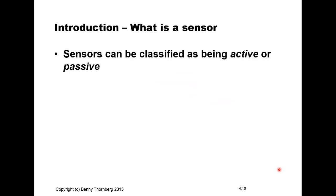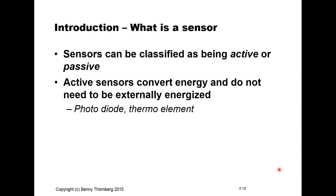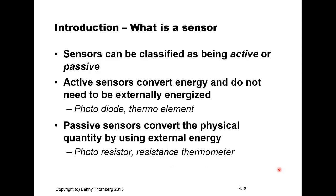We can further classify sensors into being either active or passive. An active sensor can convert the energy of the input and does not need any external energy to work. Examples of such are photodiodes for measuring light intensity or a thermal element for measuring temperature difference. A passive sensor, on the other hand, converts a physical quantity by using external energy, so we need an external power supply to make it work. Examples of such are photoresistors or different kinds of resistance thermometers.